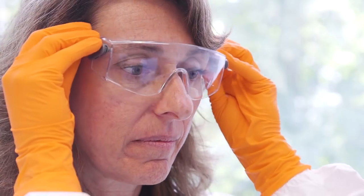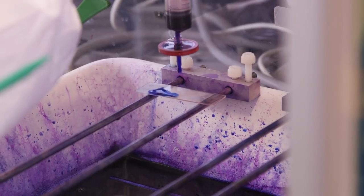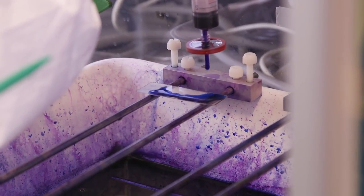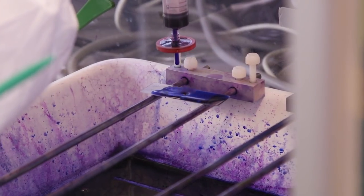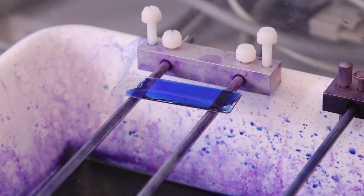Then the slide needs to be fixed and stained with Giemsa, which is a blue colorant that will allow us to see the red blood cells and the parasites on a microscope.